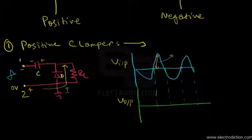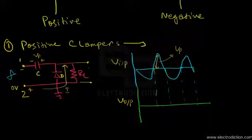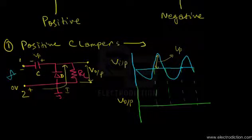Let the peak value of the input voltage signal be Vp. The capacitor charges to voltage Vp with the polarity shown in the diagram. During this phase the diode conducts, behaving primarily as a short circuit element, so the capacitor charges and stores the charge. Since the diode behaves as a short circuit element, we get no voltage across the diode and hence no voltage output across the load resistance. So in the first half cycle, the output voltage remains zero.